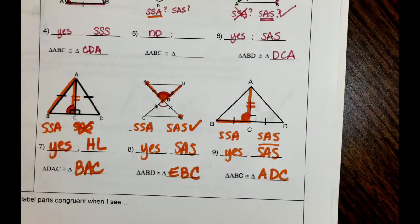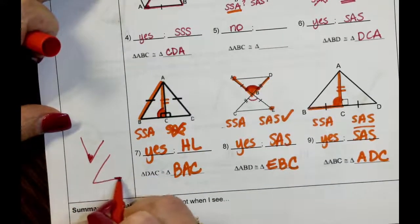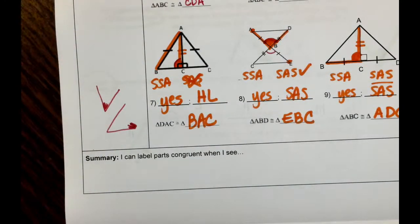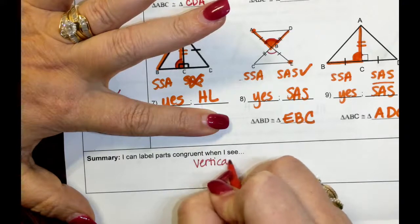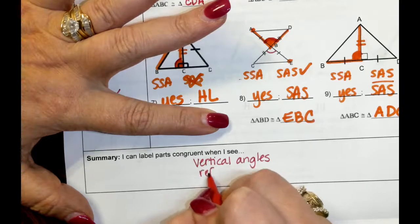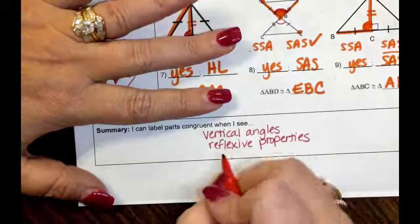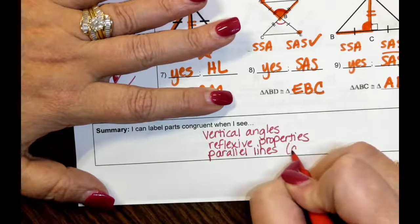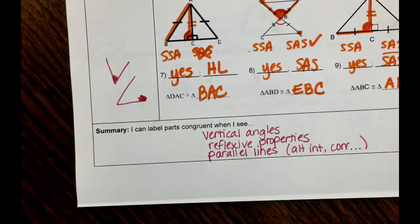In summary, your Side-Angle-Side looks like the angle included between the two sides, and your Side-Side-Angle looks like the angle off to the side. There are three primary ways to label parts congruent when they're not directly stated: when you see vertical angles, you can label those as congruent; when you see the reflexive property — overlapping angles and sides — you can label those as congruent; and when you see parallel lines, you can label alternate interior angles, corresponding angles, and so on as congruent. Those three things are primary for getting information about triangles that isn't stated directly.